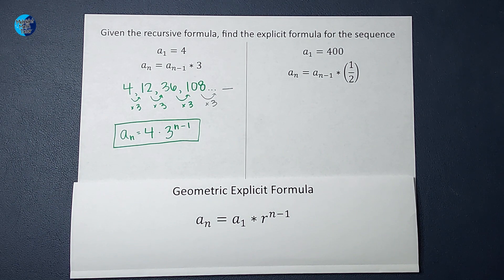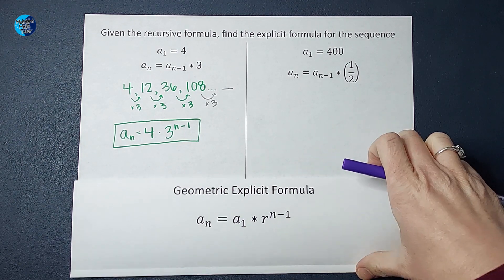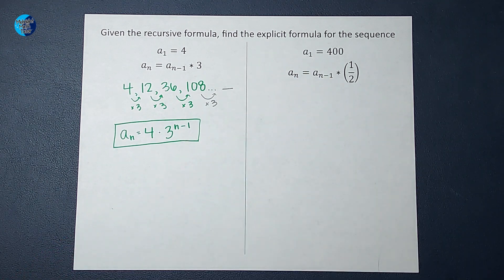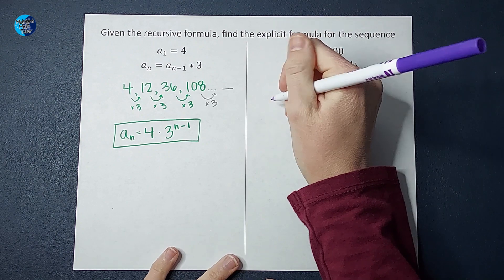Okay, let's go ahead and look at the next one. In this one, a sub 1 is 400. So that's telling me that the first number in my sequence is 400.